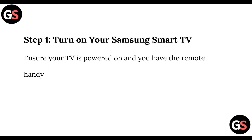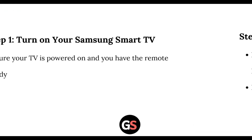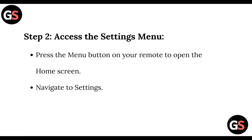Step 1: You need to turn on your Samsung Smart TV. Ensure your TV is powered on and you have the remote on hand. Step 2: Access the settings menu. Press the menu button on your remote to open the home screen, then navigate to Settings.